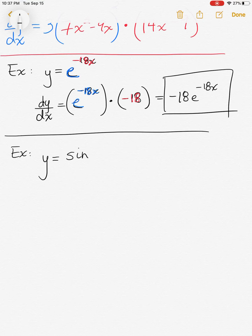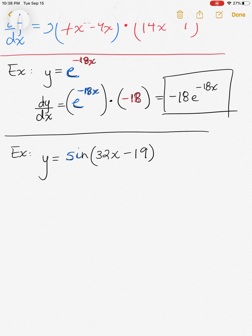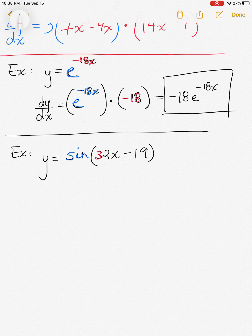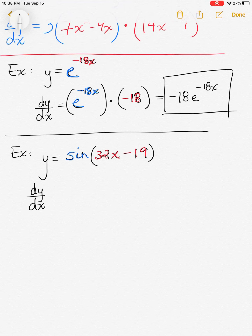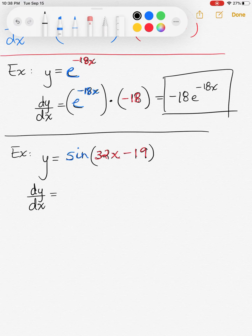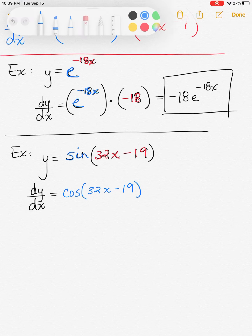Let's say we have y equals sine of 32x minus 19. In front of us we have two differentiable expressions: we have the sine function, and we also have the expression inside of it, 32x minus 19. That tells us we're going to differentiate twice with the chain rule. The derivative of sine is cosine, and everything that was inside stays inside.